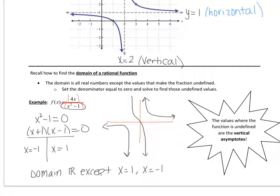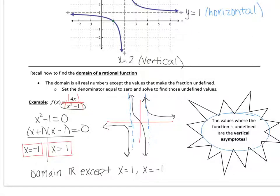So what you just solved for — x equals 1 and x equals negative 1 — these are the values where the function is undefined. So this is at negative 1 and this is at positive 1. These would be your vertical asymptotes. The values where your function is undefined represent your vertical asymptotes.